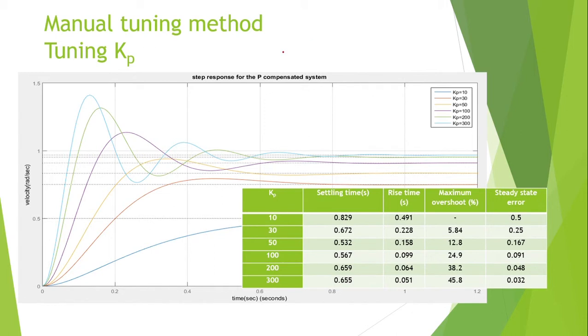Next, the second method we use is manual tuning. This method does not require any calculation. We just tune the PID constants Kp, Ki, and Kd.